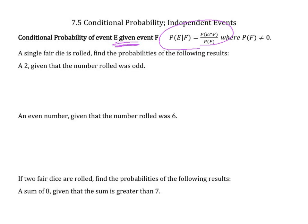A single fair die is rolled. Find the probability of the following results: A 2, given the number rolled was odd. First we need to figure out what the probability of a 2 and an odd number are if we were to roll them together. Well, it's not possible because 2 is an even number and we first rolled an odd. So 0, this can't happen because 2 is even.